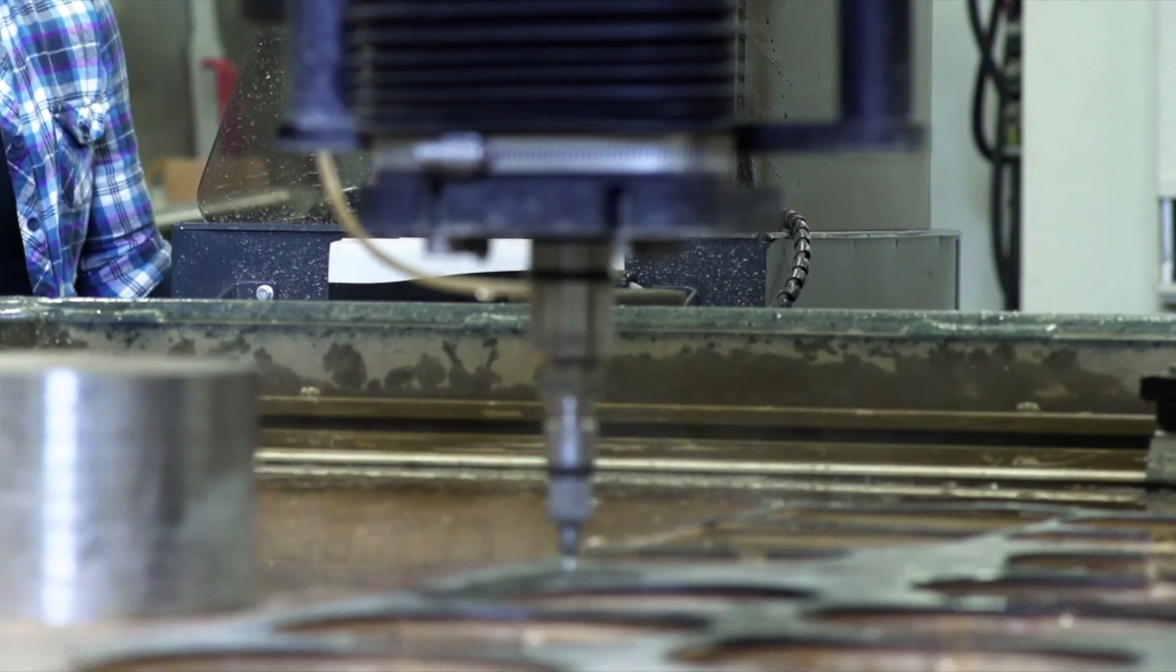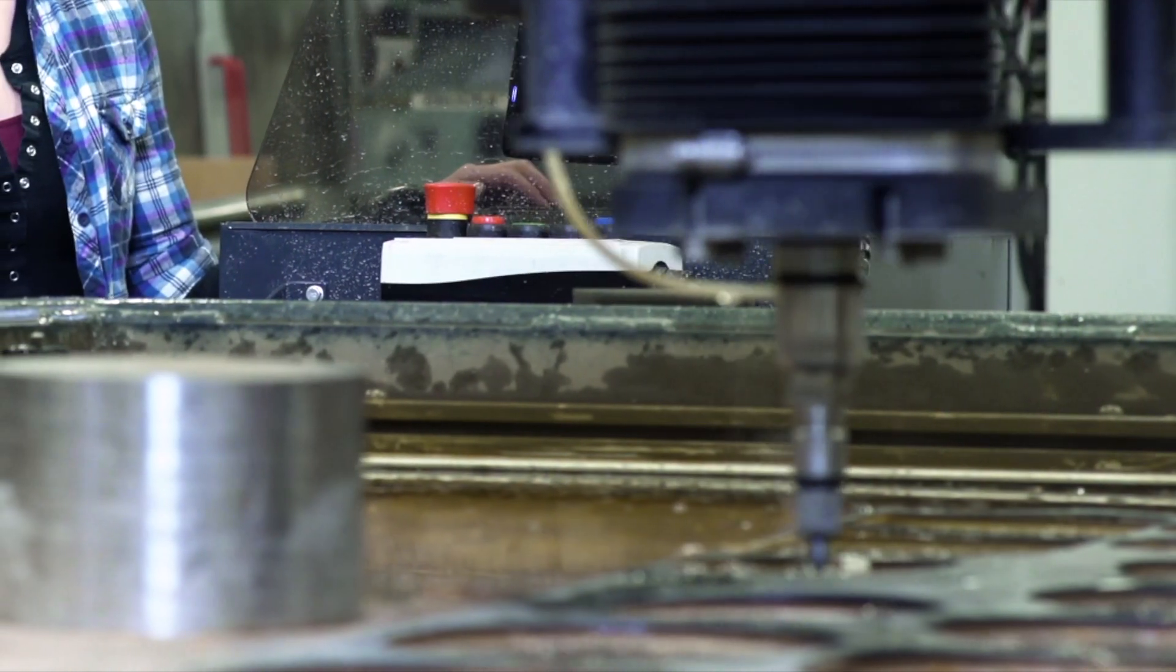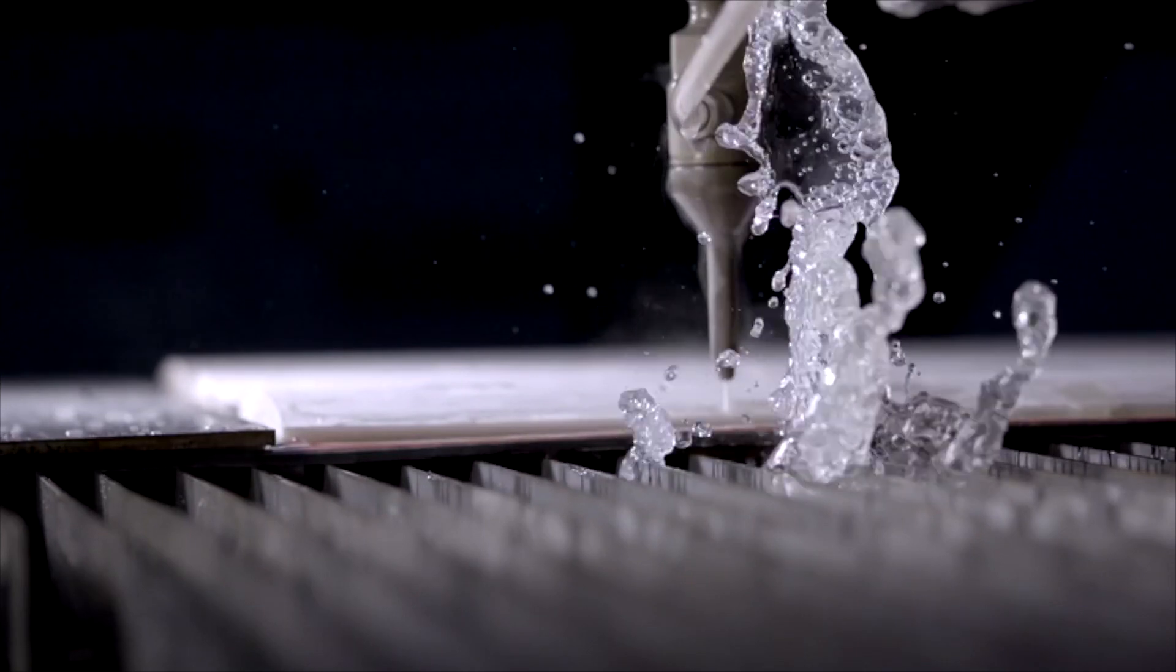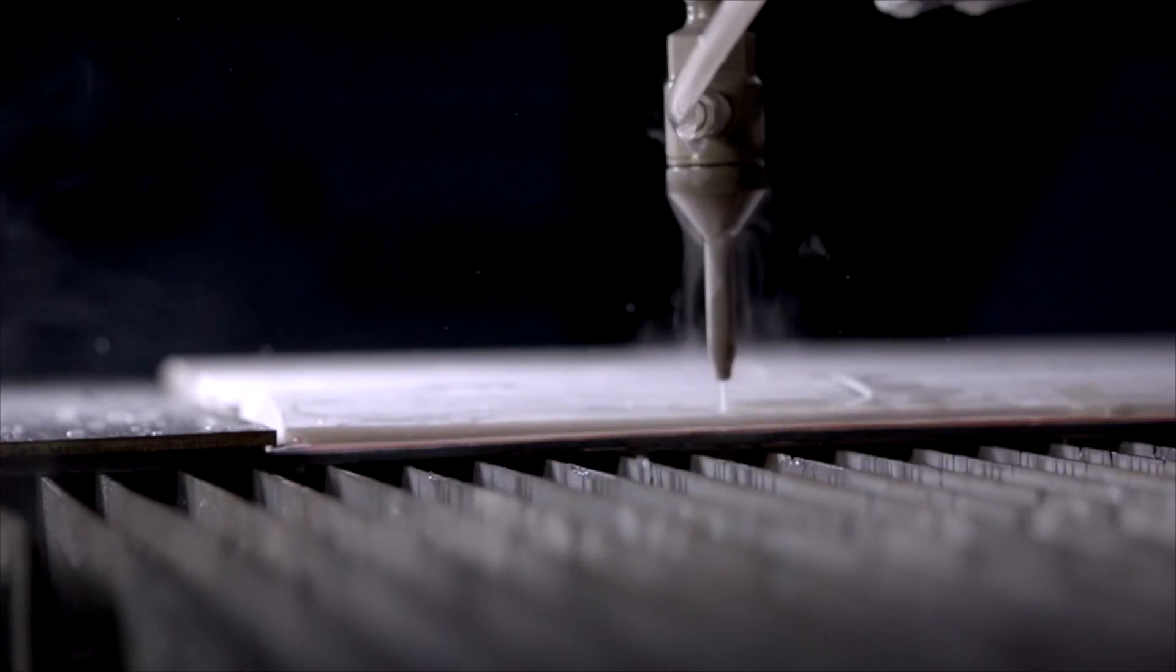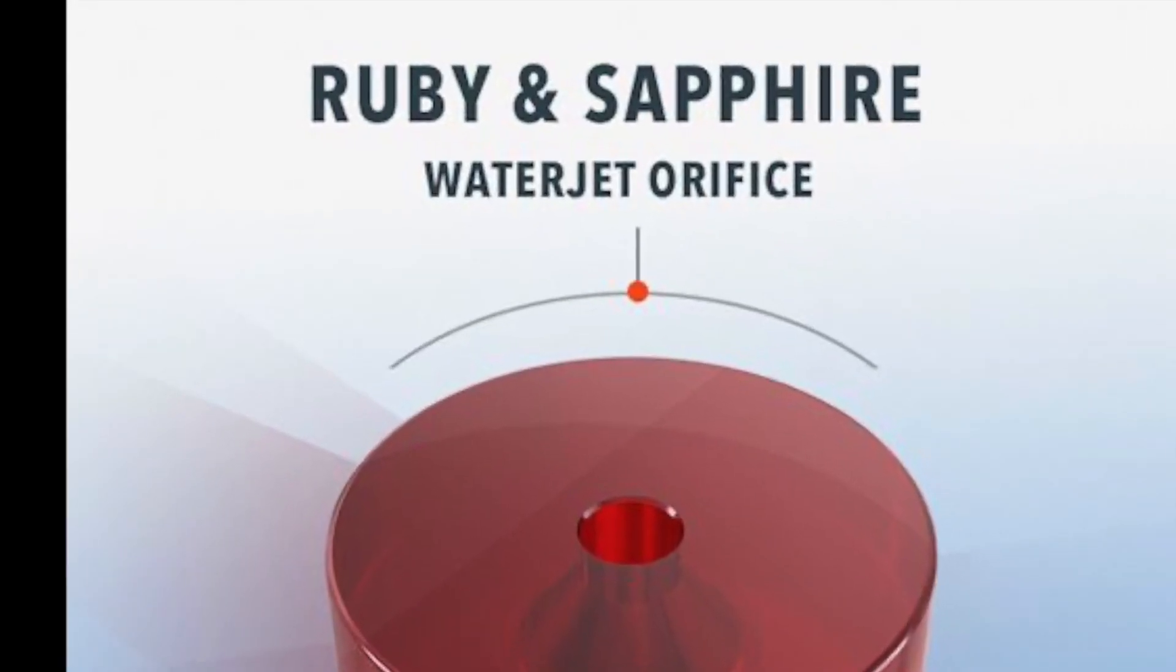What does this information mean when looking at a cutting head? For us at Henco, it means choosing a cutting head should really start with a conversation about orifices. There are three types of orifice materials available today: ruby, tetrachor, and diamond.